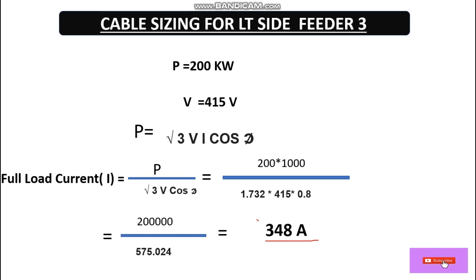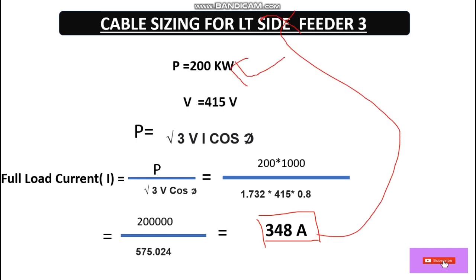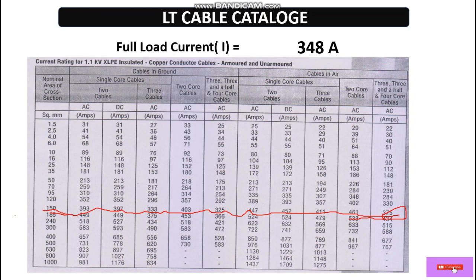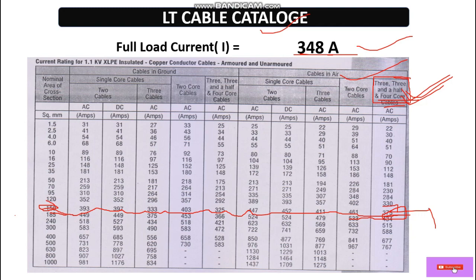Now let's move to the catalog. As per this full load current, which cable size would be feasible? We are going to lay the cable in ambient air — air site. Since this is a three-phase four-core system, looking at the catalog: 348 amperes falls between 330 and 375, so 375 amperes corresponds to a 150 square mm cable.